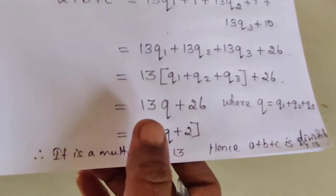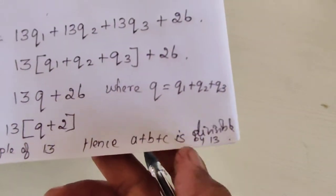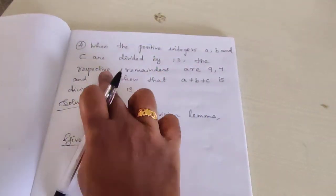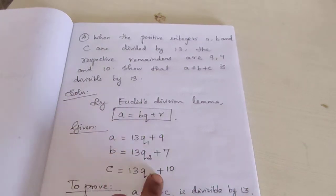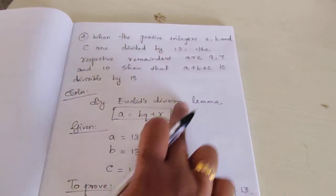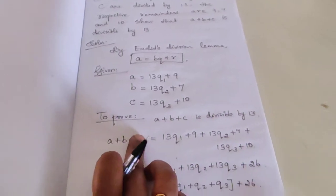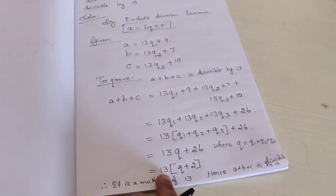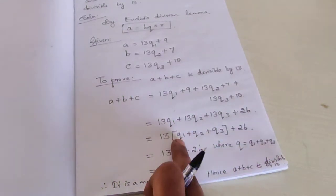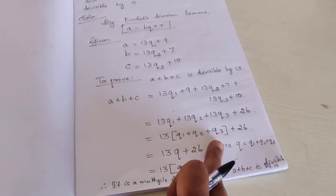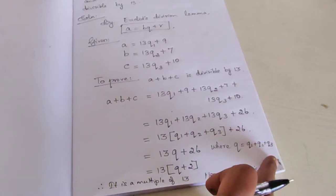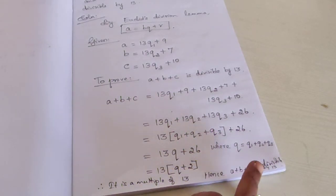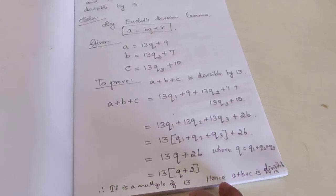Once again, recollecting: when the positive integers a, b, and c are divided by 13, we write the respective remainders. Then we find a plus b plus c, take common terms outside, and at last we get 13 into (q plus 2). Denoting q₁ plus q₂ plus q₃ as q, we get a multiple of 13. Hence a plus b plus c is surely divisible by 13.